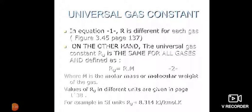Values of Ru, the universal gas constant, in different units are given on page 1.38. For example, in SI units, Ru equals 8.314 kilojoules per kilomole-Kelvin.